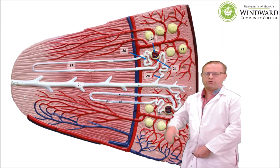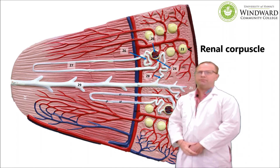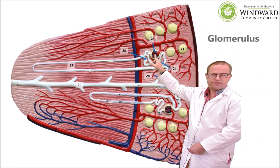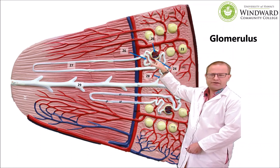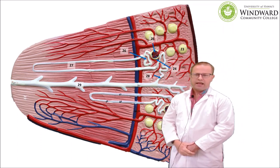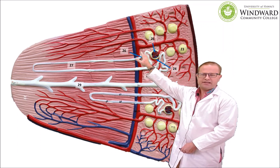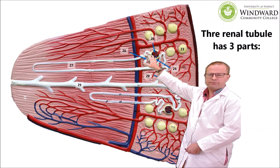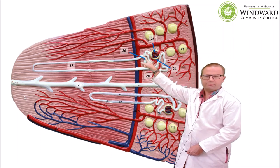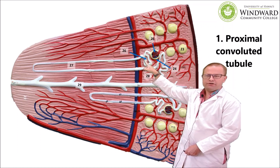Looking at the structures up here in the cortex, right here you have something called the renal corpuscle. The renal corpuscle is a structure composed of the Bowman's capsule and also the glomerulus — the glomerulus is a capillary bed surrounded by the Bowman's capsule. The glomerulus is a very leaky capillary bed under high pressure, and under that pressure some fluid leaks out and enters the Bowman's capsule. After that, it enters the renal tubule. The first part of the renal tubule is called the proximal convoluted tubule — proximal because it's close to the renal corpuscle, and convoluted because it's wavy.